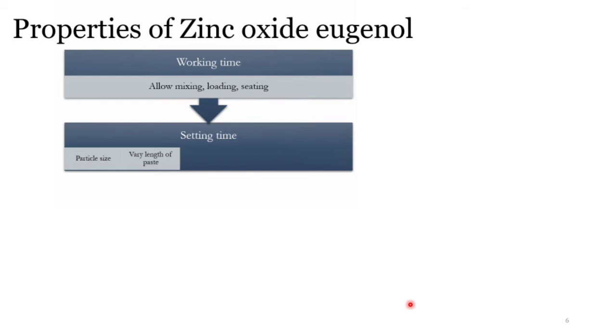When atmospheric pressure is high and when there is humidity, these conditions individually or together can increase setting time. Temperature also plays a role: if you cool the glass slab and mix on it, setting time increases. If you heat it up, it will set faster.